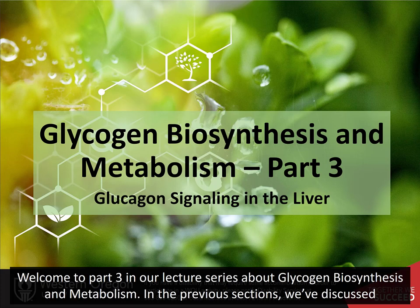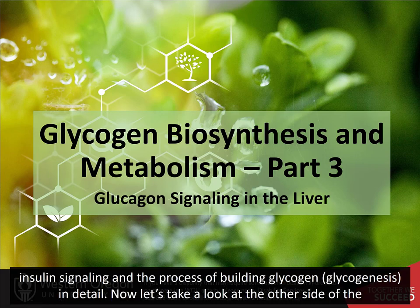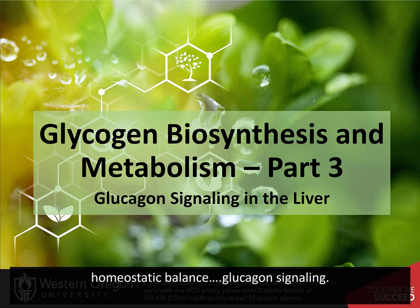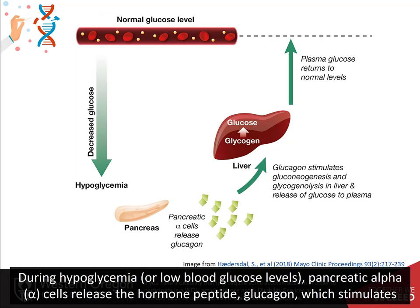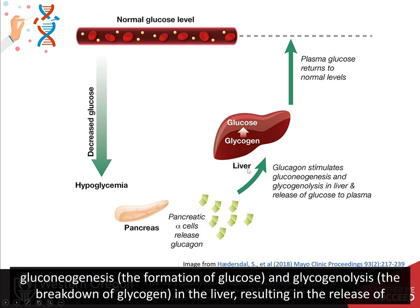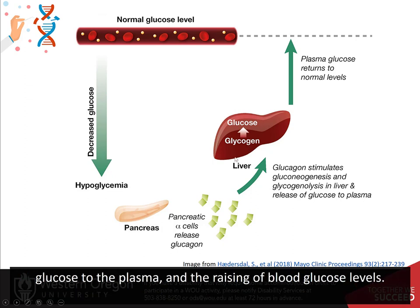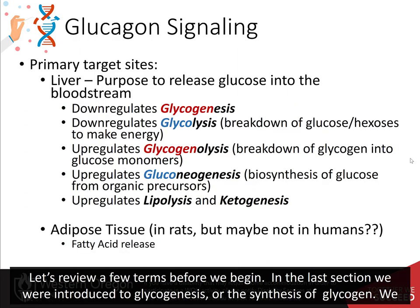Welcome to part 3 in our lecture series about glycogen biosynthesis and metabolism. In the previous sections, we've discussed insulin signaling and the process of building glycogen, glycogenesis, in detail. Now let's take a look at the other side of the homeostatic balance: glucagon signaling. During hypoglycemia, or low blood glucose levels, pancreatic alpha cells release the hormone peptide glucagon, which stimulates gluconeogenesis and glycogenolysis, the breakdown of glycogen, in the liver, resulting in the release of glucose to the plasma, raising blood glucose levels.